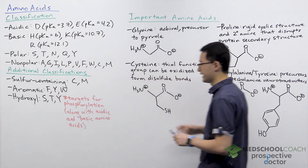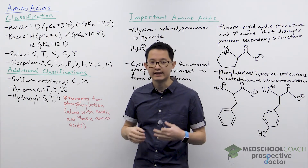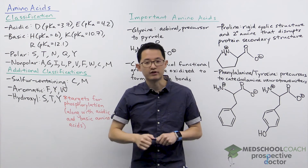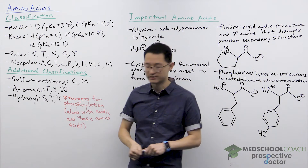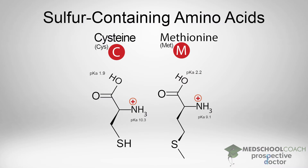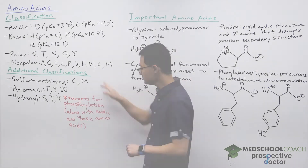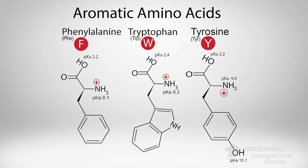There are some additional classifications you may see on the MCAT, since the acidic/basic/polar/nonpolar classification doesn't fully describe the functions of all amino acids. We have two sulfur-containing amino acids: cysteine and methionine — both of their side chains contain a sulfur atom. We also have aromatic amino acids, whose side chains are aromatic and important for unique side chain interactions.